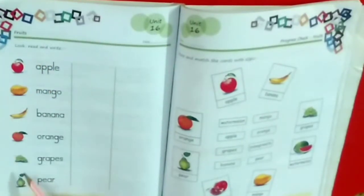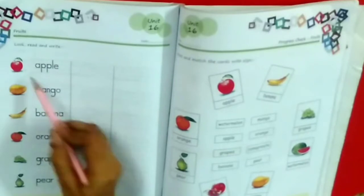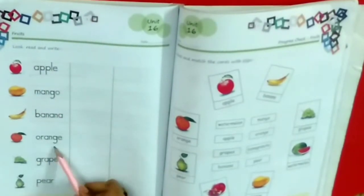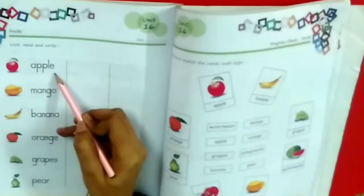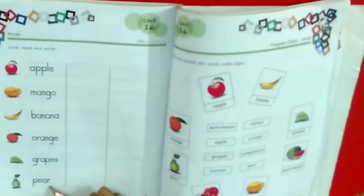These are the fruit names: apple, mango, banana, orange, grapes, pear. Say again with me: apple, mango, banana, orange, grapes, pear.